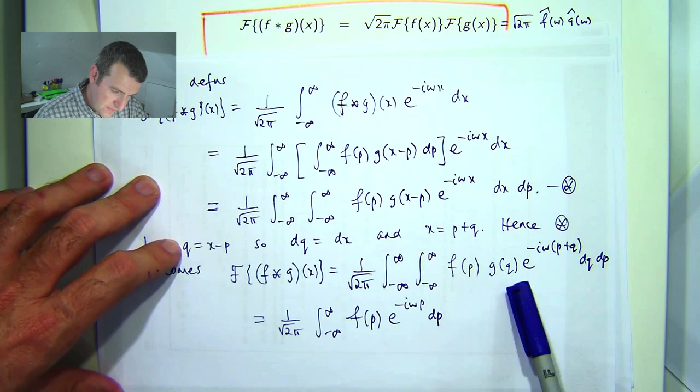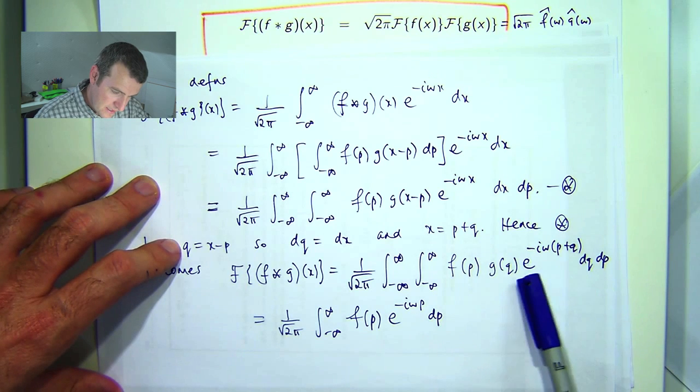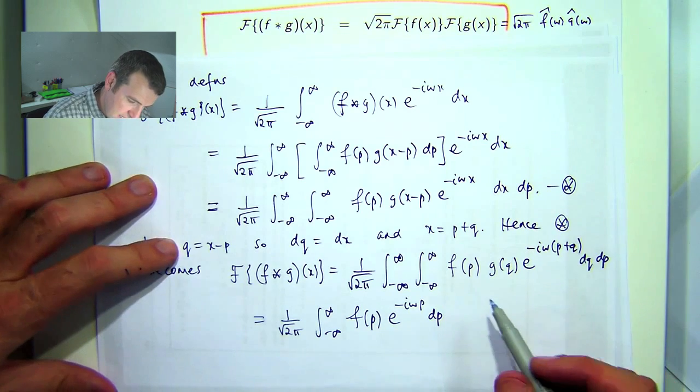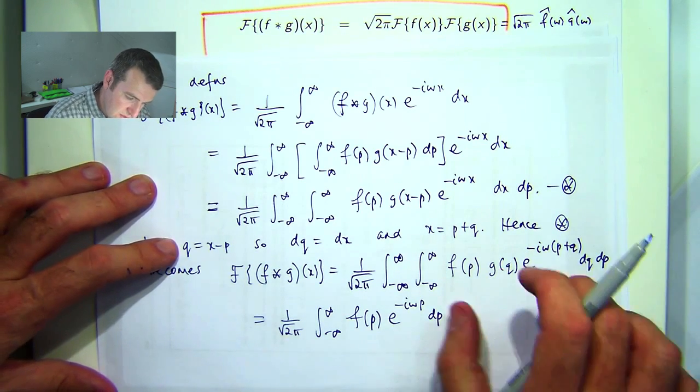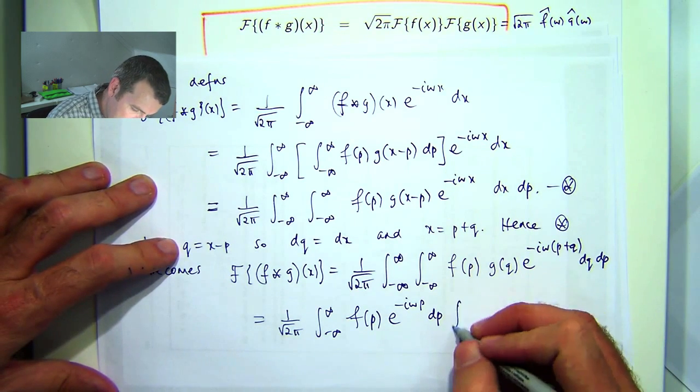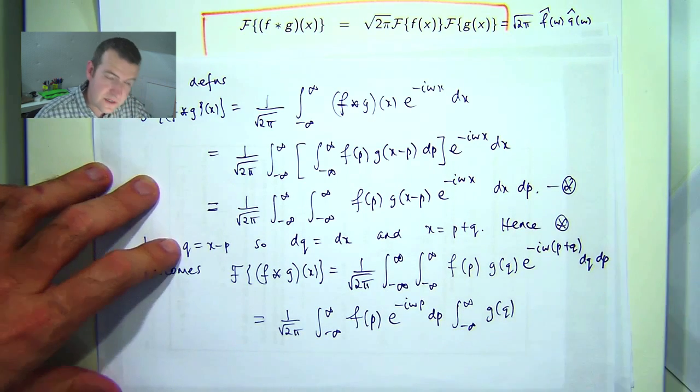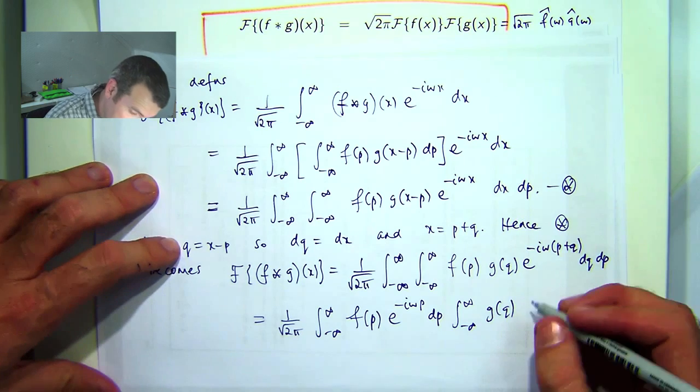And what's left, well, I have g of q times e to the negative i w q. So essentially what I can do is split the double integral into the product of two single integrals.